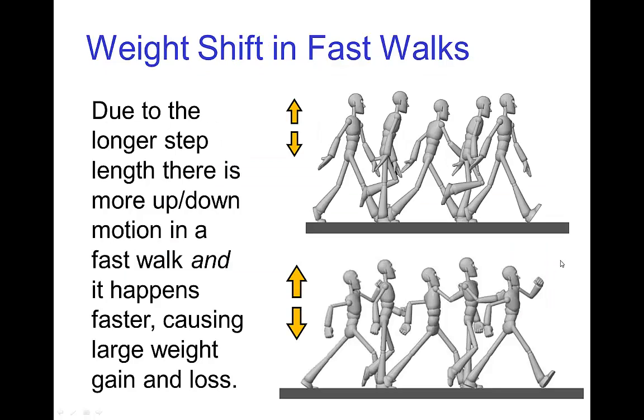Now because both the stride length and the stride rate increase in a fast walk, both of these serve to promote greater weight gain and loss. For one thing, there's more up and down motion because of the longer stride length. So if you take a large step, then you drop further down in the contact pose and you rise further up in the passing position than if you take small steps. Furthermore, if you're doing this quickly, then there's more acceleration occurring because the steps are occurring with a quicker timing. So both of these serve to create more weight gain and loss for a fast walk.